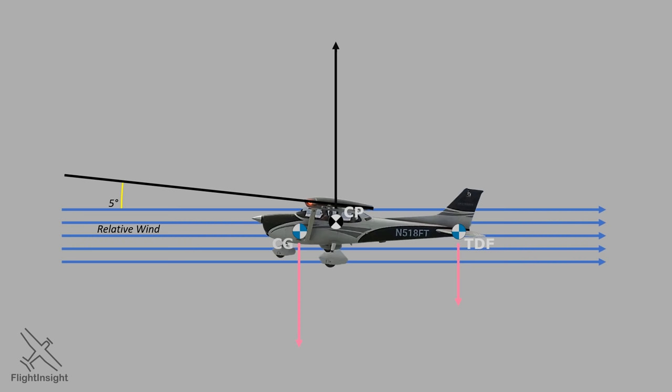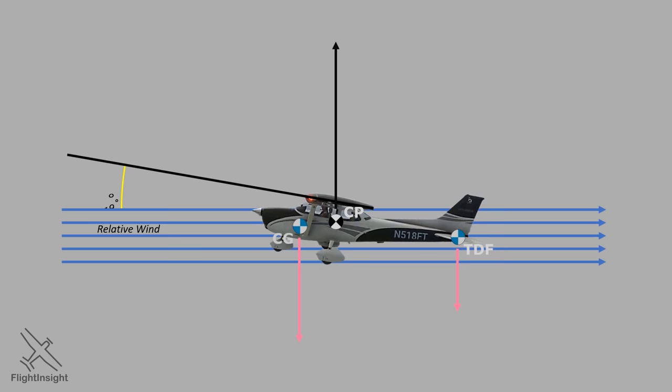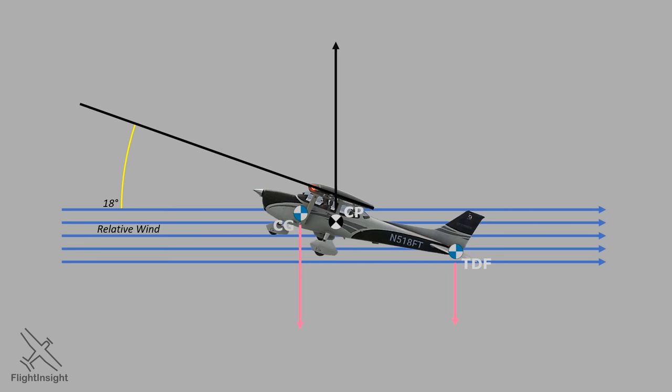Why is this a good thing to have the CG and CP in different locations? Well, consider what happens in a stall. We pitch up to our critical angle of attack. A stall is a rapid drop in lift. If the center of pressure is the point we attach the string to the top of the aircraft, we might think of the stall like we're cutting that string.